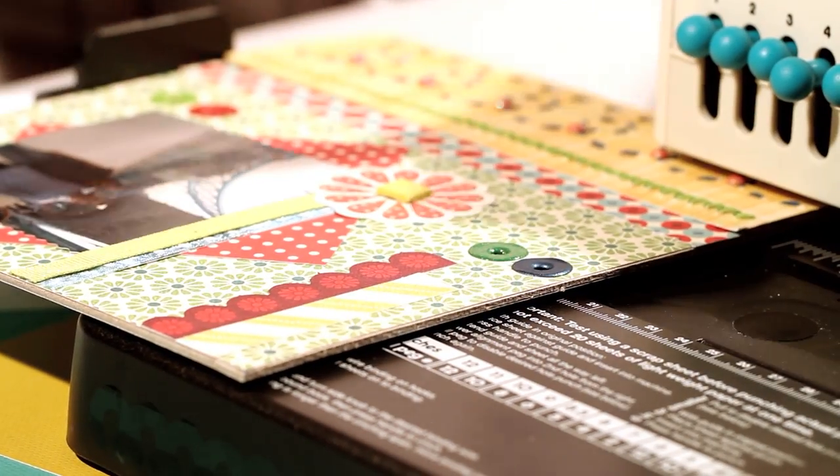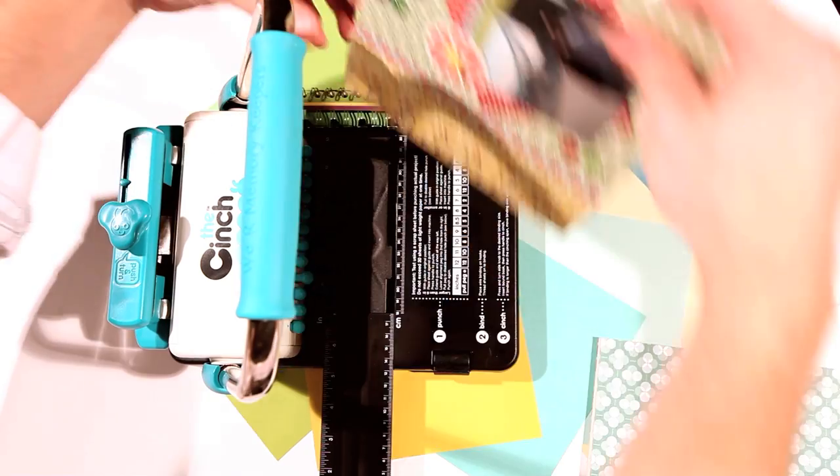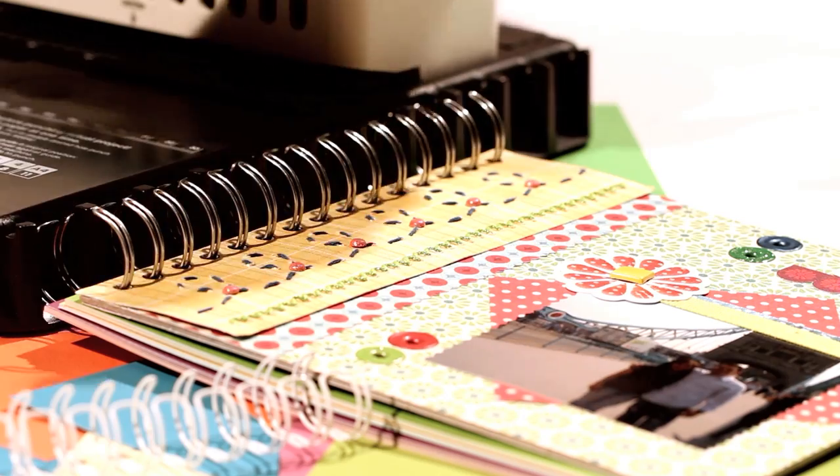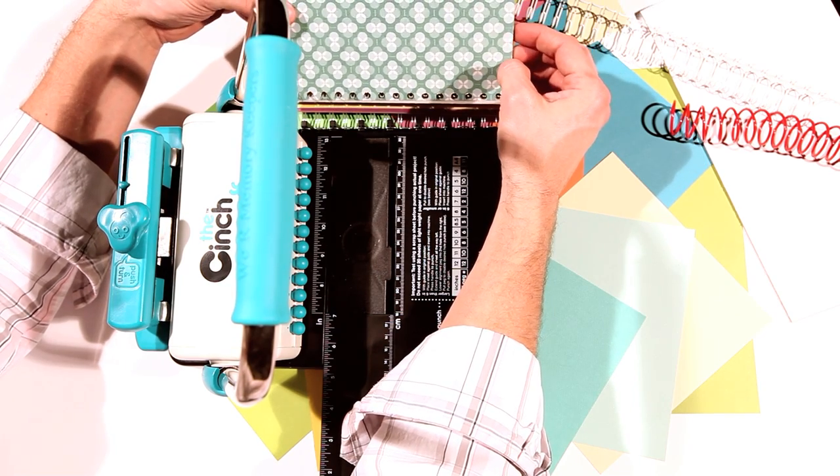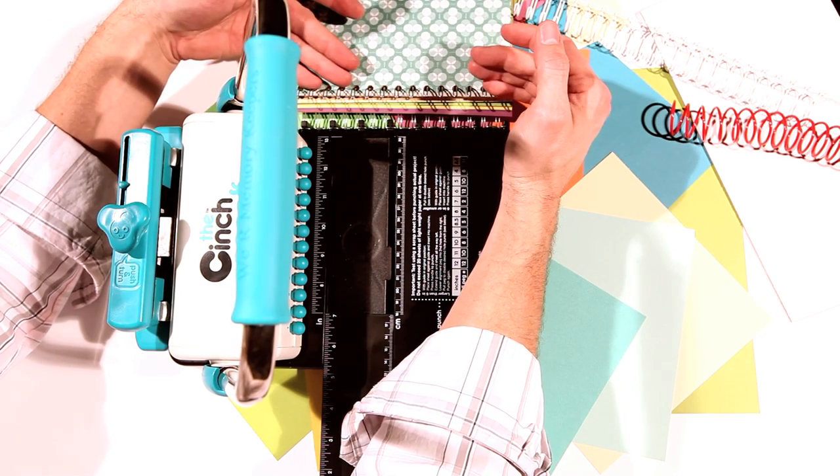When you're ready to place your covers on the binding, do the front cover first, then flip the back cover around and place it on top of the front cover. This will help hide the spine of the binding once the book is cinched.